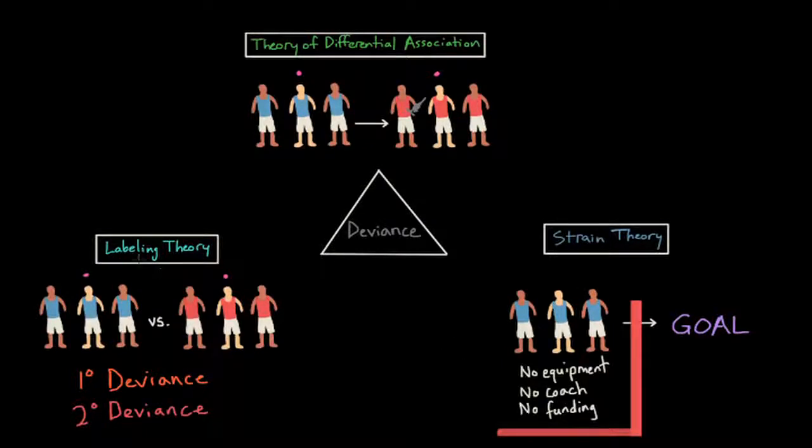So if we think about our athlete example, imagine that he attends a school that doesn't have access to proper training equipment, or doesn't have access to a qualified coach or solid funding. The athlete becomes frustrated with his inability to become an elite athlete, and so he turns to deviant behavior.